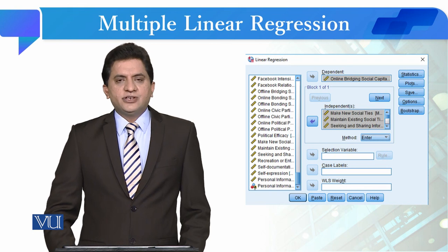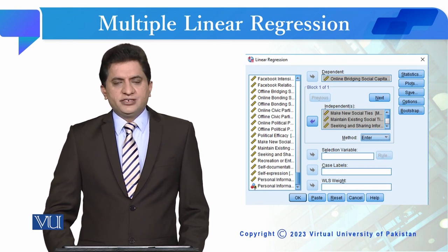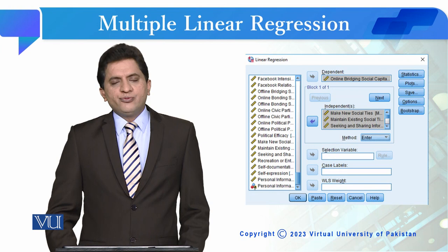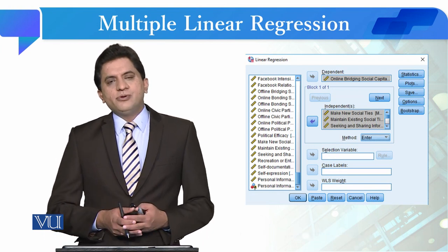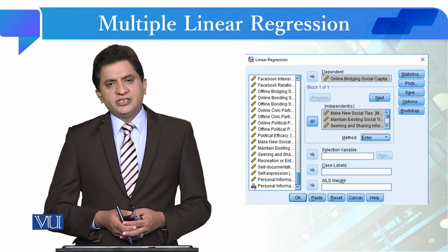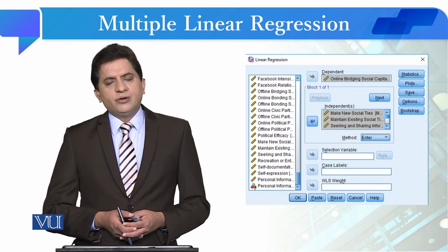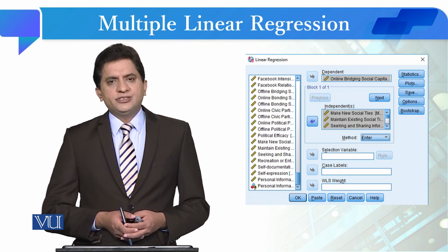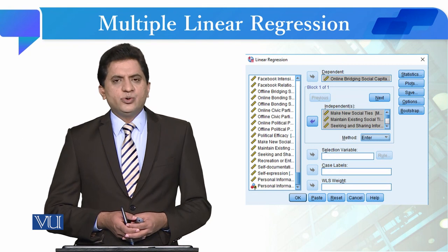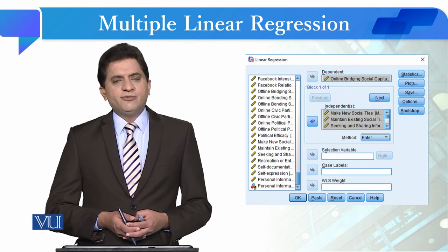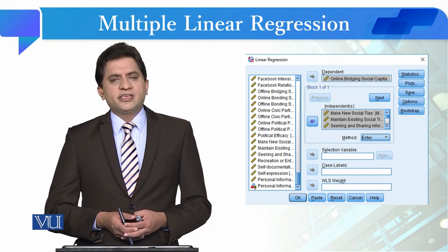To hamare paas jo hai analysis run hokar output sheet mein aa jayega jisko hum output view bhi kehte hain. To hum next module mein jo iske different results hain is exercise ke wo hum un pe baat karenge aur assumptions ke saath relate karenge results ko.